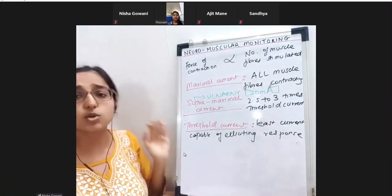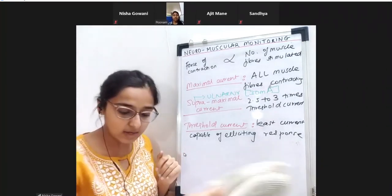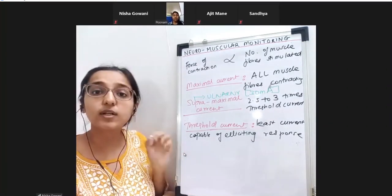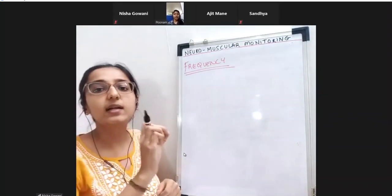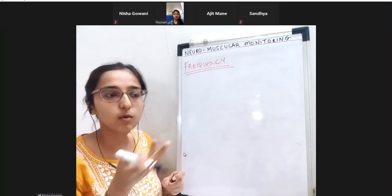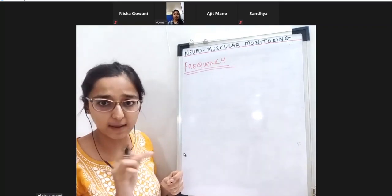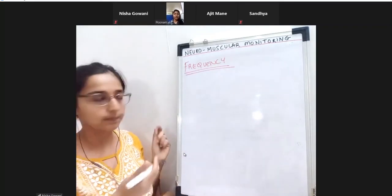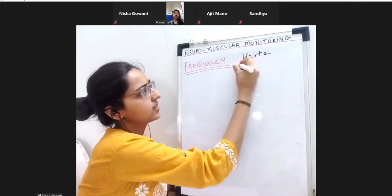We have understood what is current. Now we understand what frequency will we deliver this current. When delivering current, we deliver 30 mA - but how many times? That is the frequency, measured in hertz.